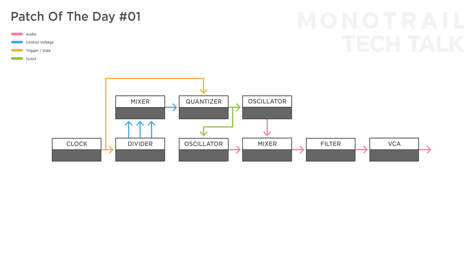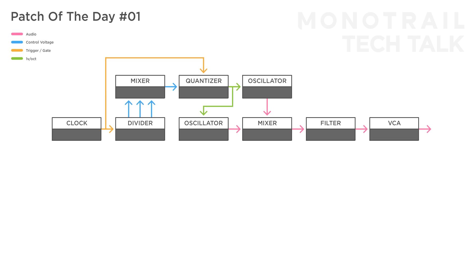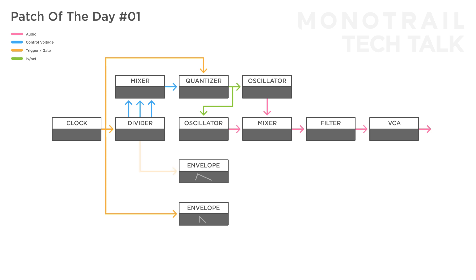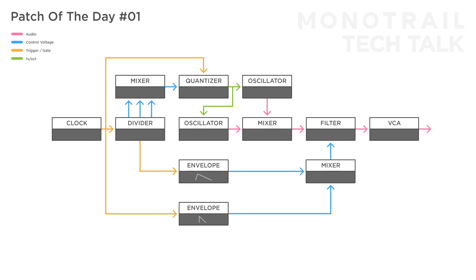To create interesting rhythms for the voice, two simple attack decay envelopes are used. One of them is triggered by the master clock, the other by a clock division. Another mixer is used to mix the envelopes together and the result is sent to the filter, modulating the frequency. Of course, you can take this base patch and experiment by expanding the voice and modulating a variety of parameters.